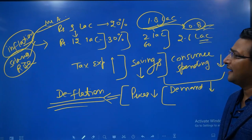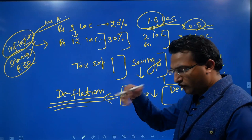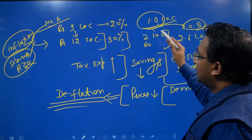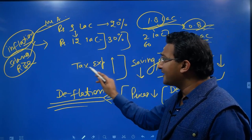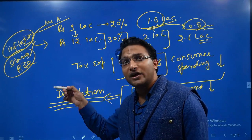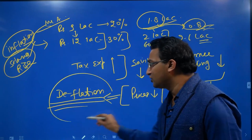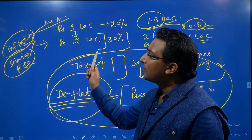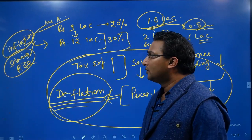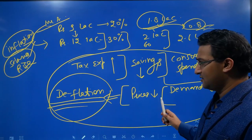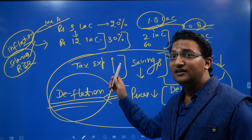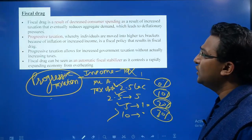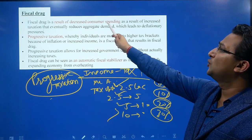A fall in prices leads to a situation of deflation. Deflation is the opposite of inflation — in inflation prices are rising, while in deflation prices are declining. Because of progressive taxation, the rise in tax expenditure is more than the proportionate rise in income, leading to deflationary conditions. This process is called fiscal drag — when because of inflation and income growth, overall spending increases but progressive taxation ultimately leads to reduction in consumer spending and deflation.